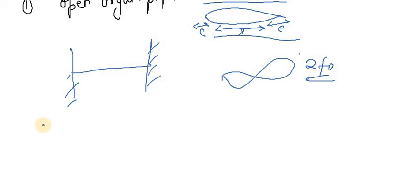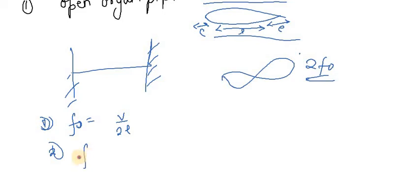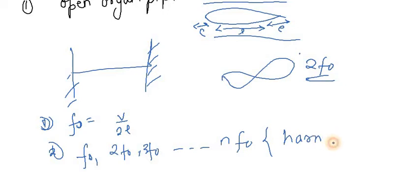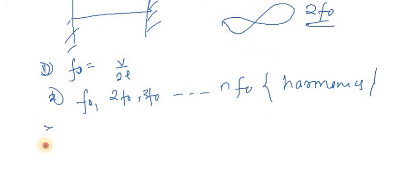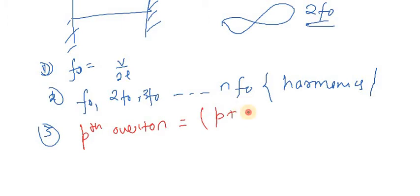For an open organ pipe, the fundamental frequency f₀ is equal to v by 2L. The harmonics present are f₀, 2f₀, 3f₀, and so on — all harmonics are possible. These are all the possible harmonics for an open organ pipe.